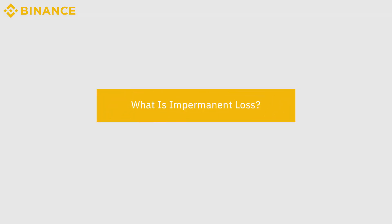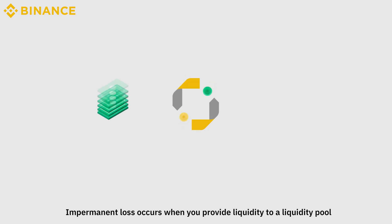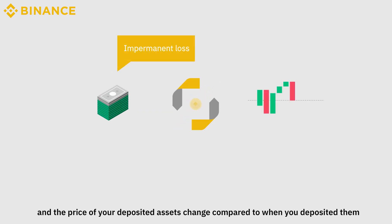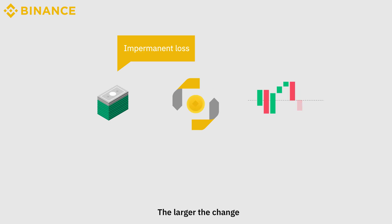What is impermanent loss? Impermanent loss occurs when you provide liquidity to a liquidity pool and the price of your deposited assets change compared to when you deposited them. The larger the change, the bigger the exposure to impermanent loss.